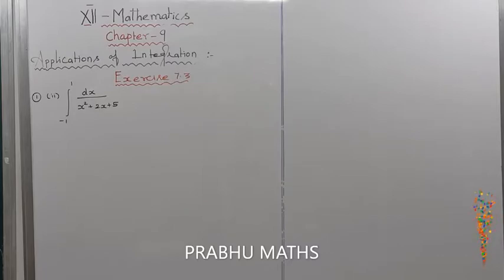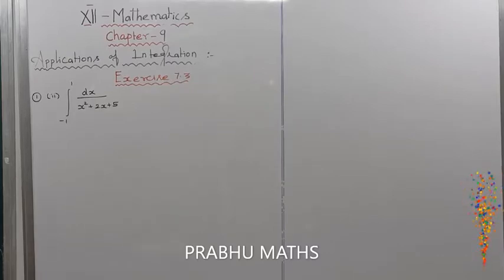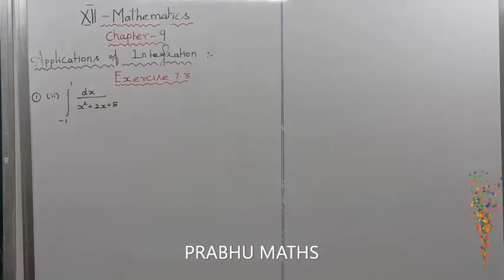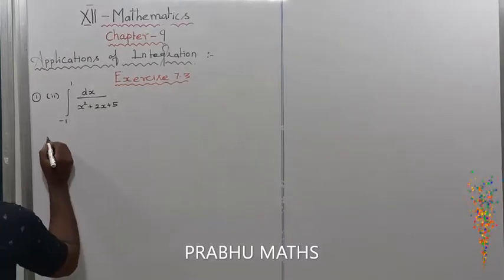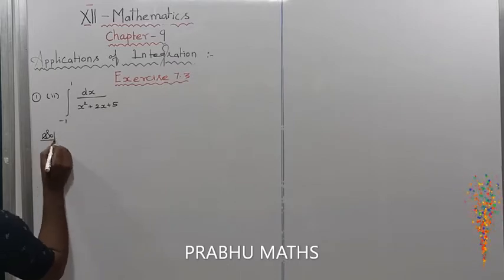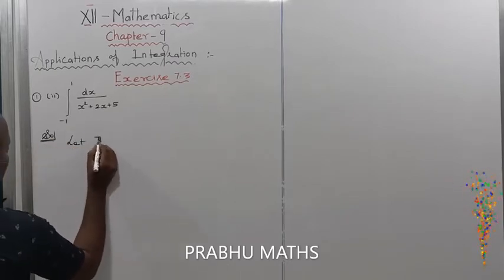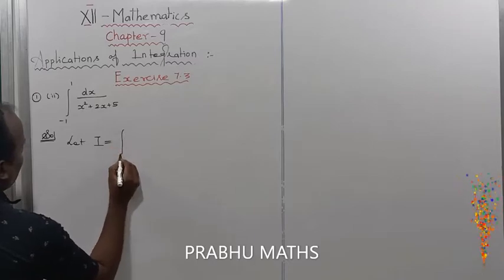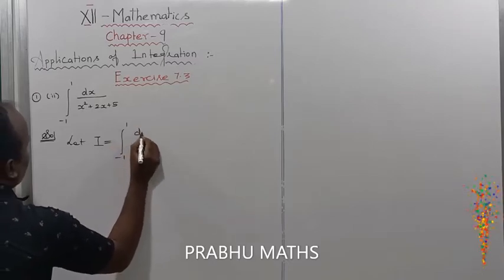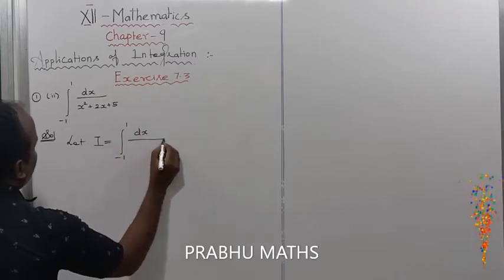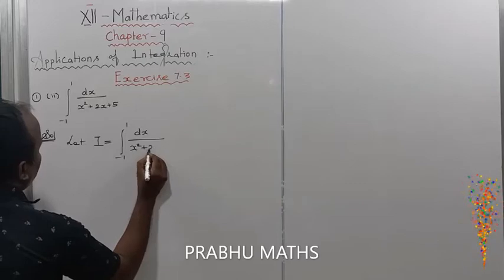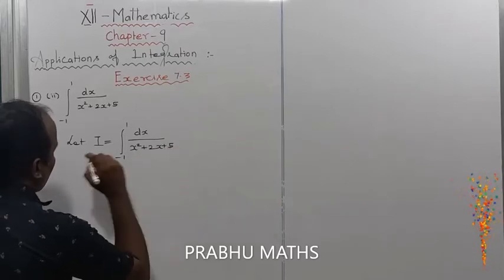Problem: First sum, second sum division. Integral from minus 1 to plus 1 of dx divided by x squared plus 2x plus 5. Let us consider the given integral value is equal to I, the integral from minus 1 to plus 1 of dx divided by x squared plus 2x plus 5.